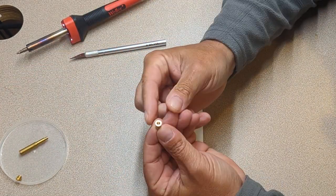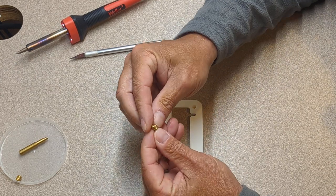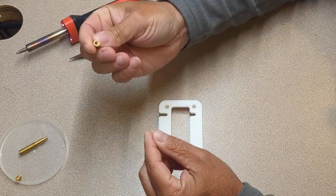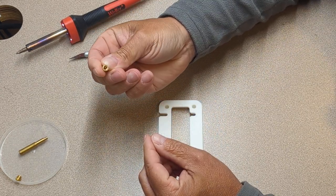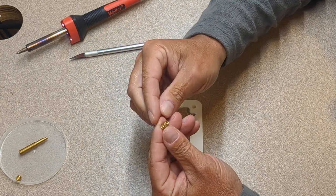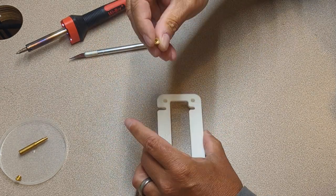What heat set inserts are is they're machined brass inserts that are really designed to provide threads to plastic parts including 3D printing.